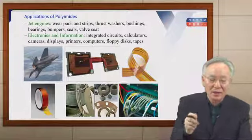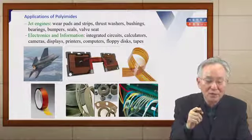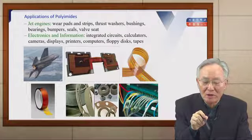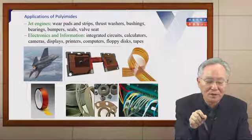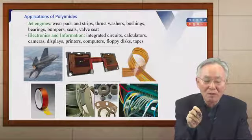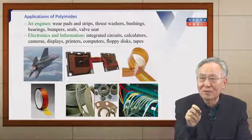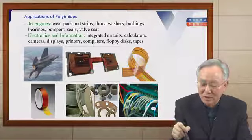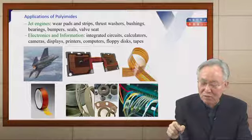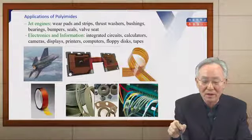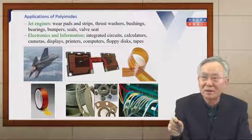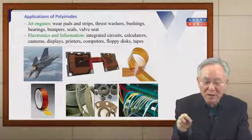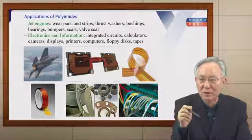The applications of polyimide are very wide. In jet engines, wear pads, strips, thrusters, washers, bushings, bearings, bumpers, and seals are made of polyimide. In electronics and information technology, circuits are printed onto polyimide film for integrated circuits. Polyimide is also used in calculators, cameras, displays, printers, computers, floppy disks, and magnetic tapes.